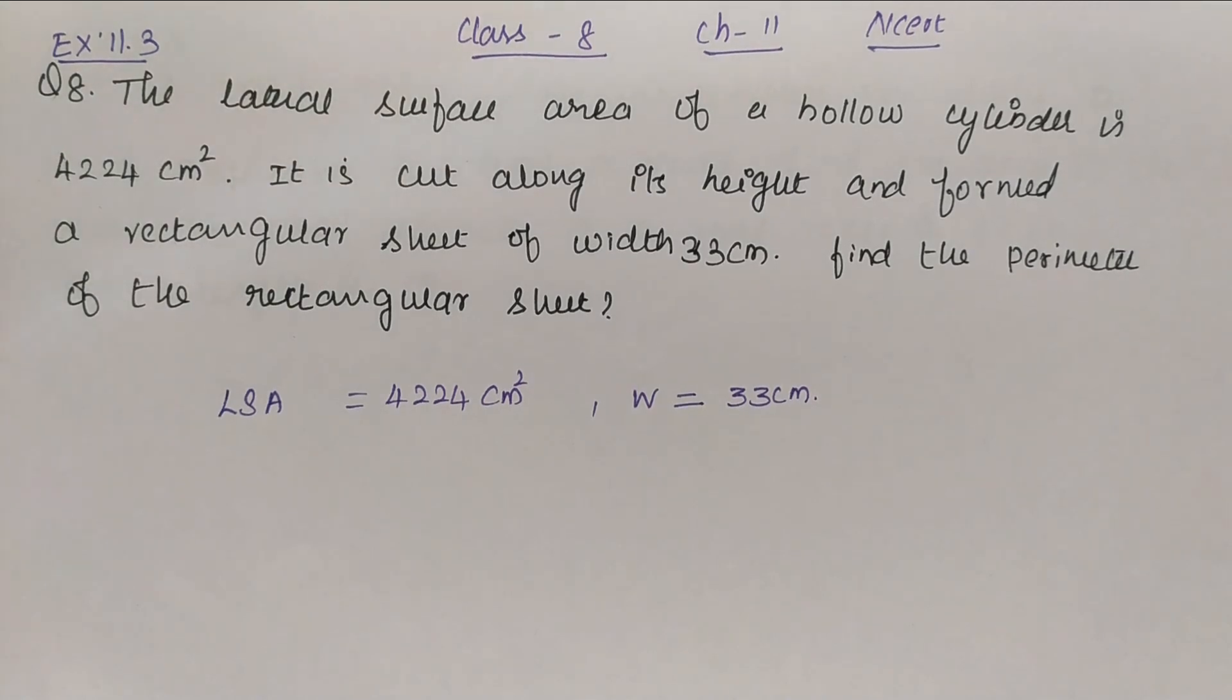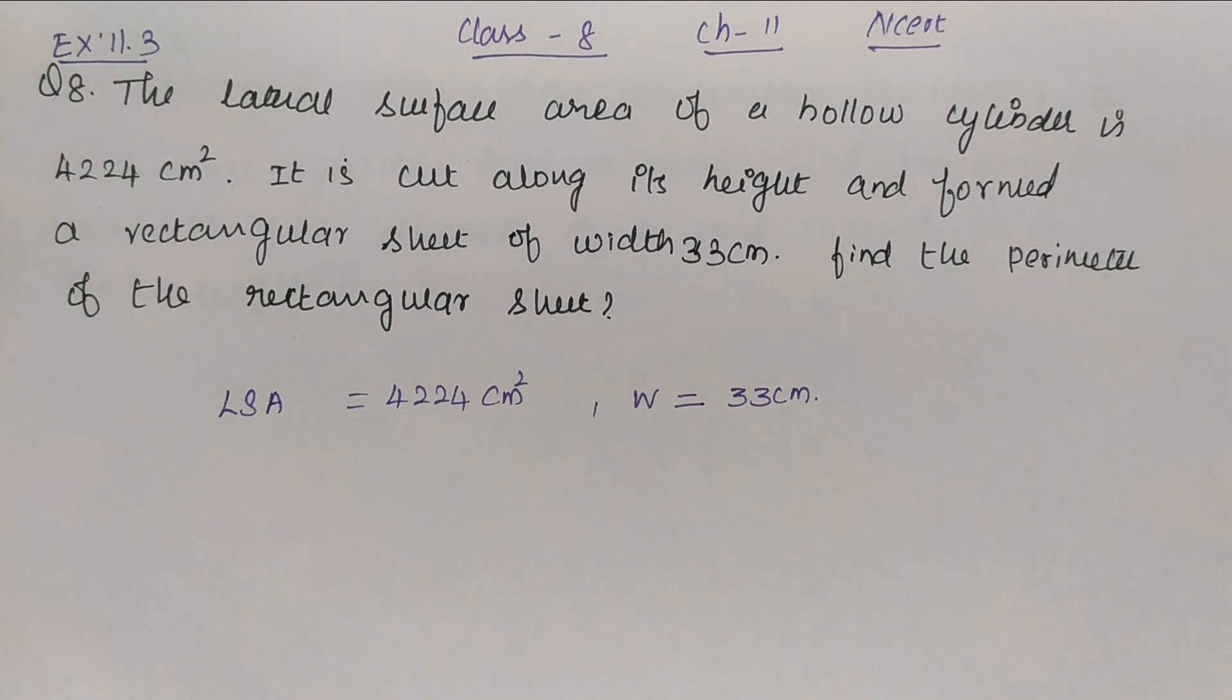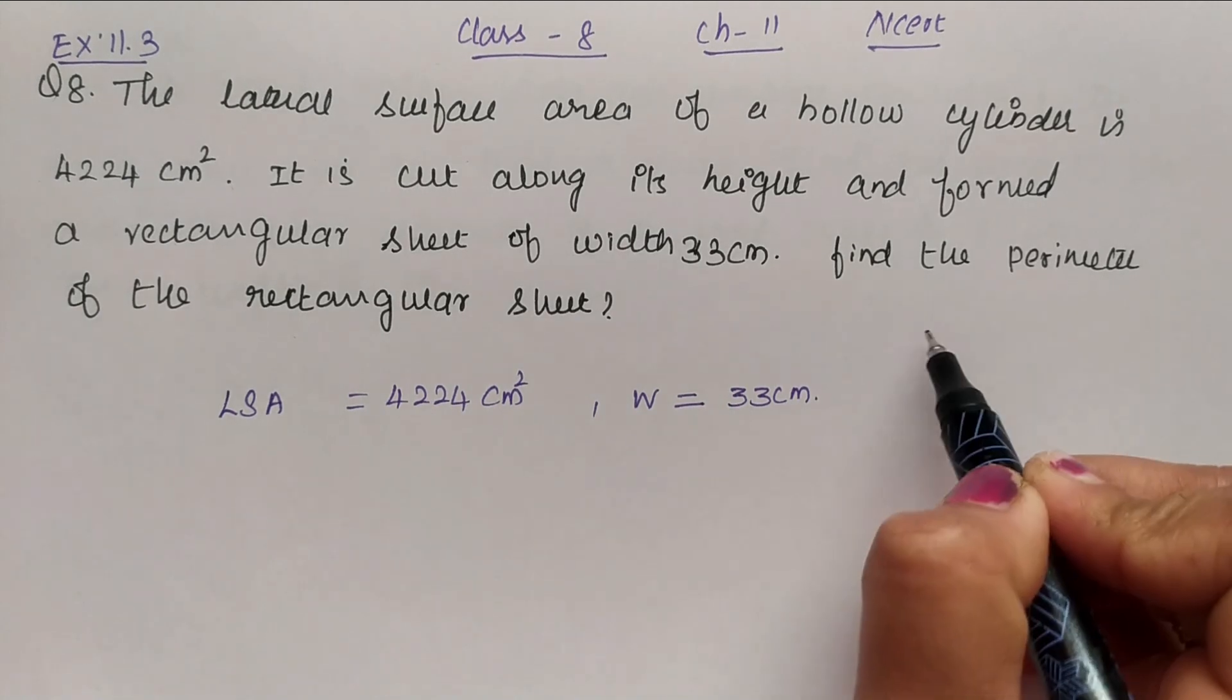Question number 8. The lateral surface area of a hollow cylinder is 4224 centimeter square. It is cut along its height and formed a rectangular sheet of width 33 centimeter. Find the perimeter of the rectangular sheet.